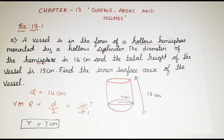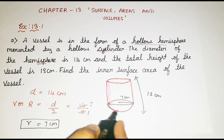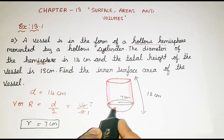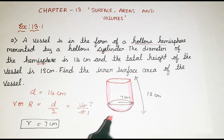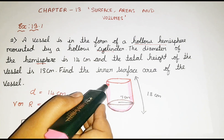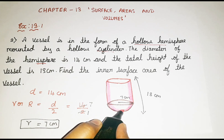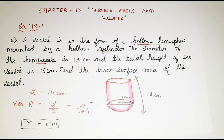They told us to find the inner surface area of the vessel. Inner surface area means this inner part — we are supposed to find the area of the inside surface. The question is: are we supposed to use total surface area or curved surface area?